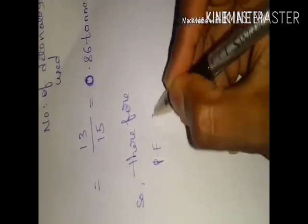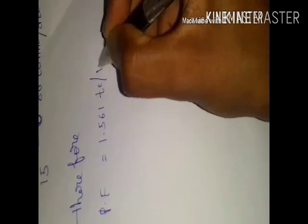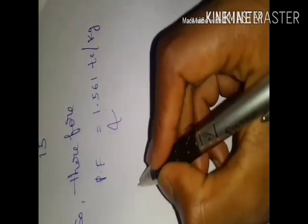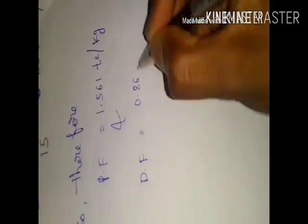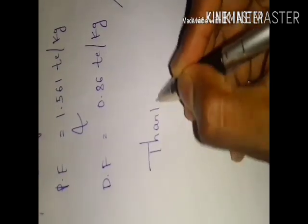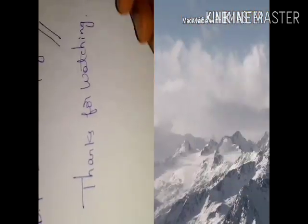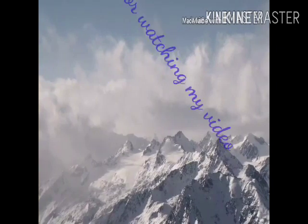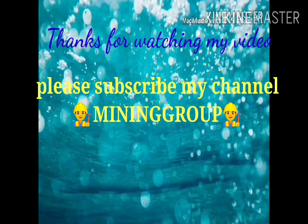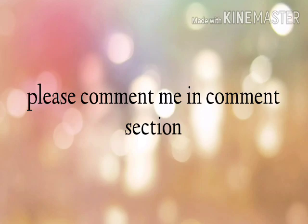Therefore, powder factor equals 1.56 tons per kg of explosive, and detonator factor equals 0.865 tons per single detonator. That's all for this problem — it's very easy, please understand and practice these kinds of problems. Thanks for watching. Please subscribe to my channel Mining Group and click the like button. If you have any doubts, please comment in the comment section.